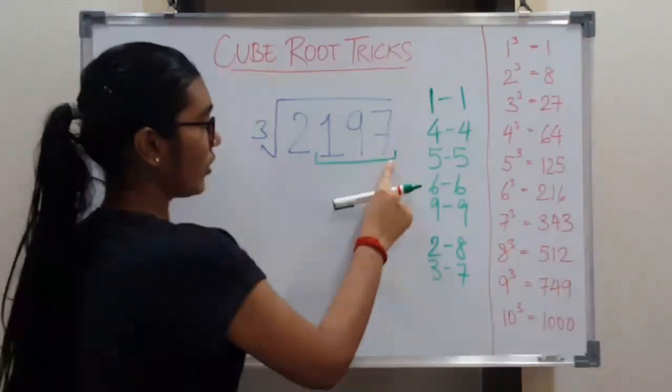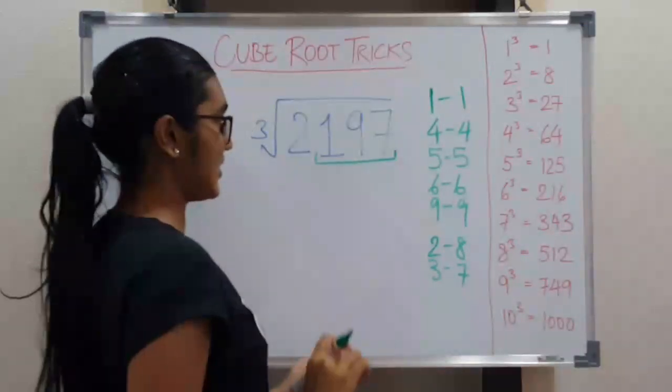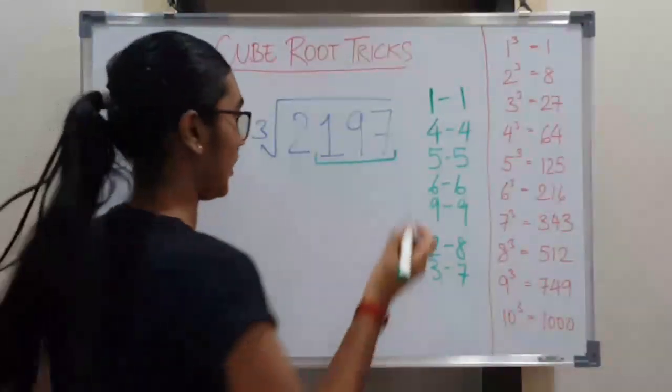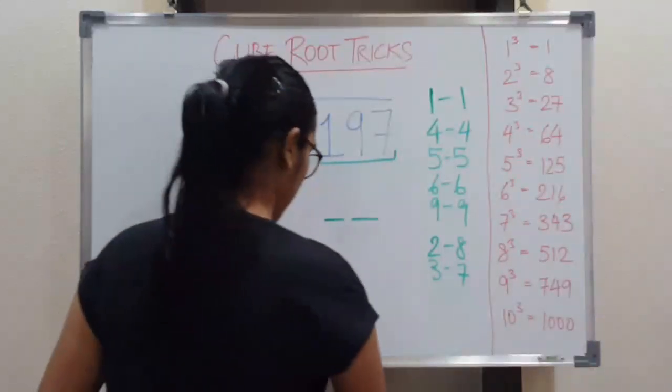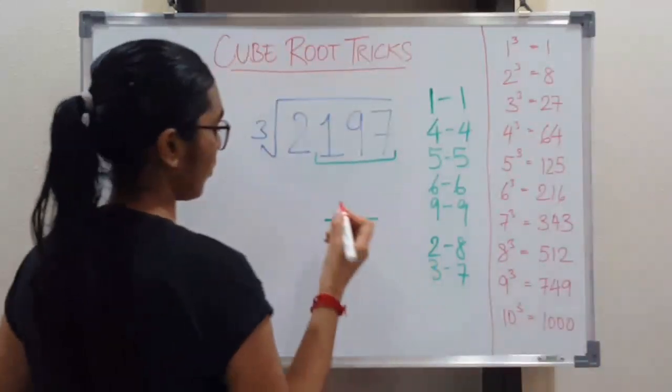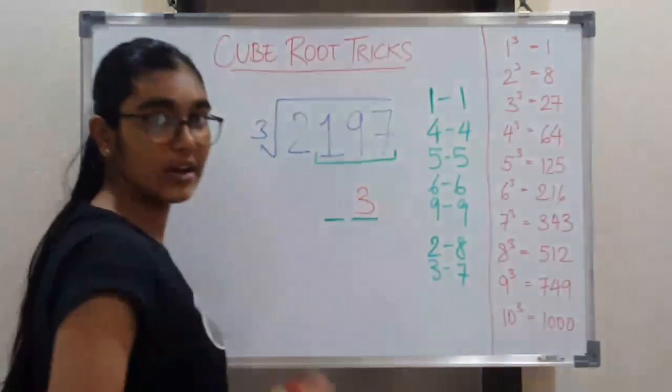What you need to do is find what cube number ends at 7. We see that is 3. So here this is the two digit number. This is the two digit number. So for 7 we know that the number is 3. So here is our first digit.